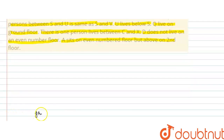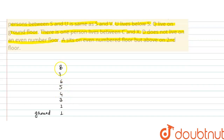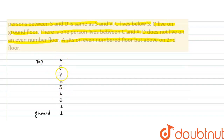Ground floor is number 1, then 2, 3, 4, 5, 6, 7, 8, 9 — topmost floor is 9. X की position बताई हुई है — 5th floor के ऊपर है और odd number है। 5 से ऊपर जो odd numbers हैं वो 7 या फिर 9 होंगे। तो X की position या तो 7 पे होगी या फिर 9 पे होगी।